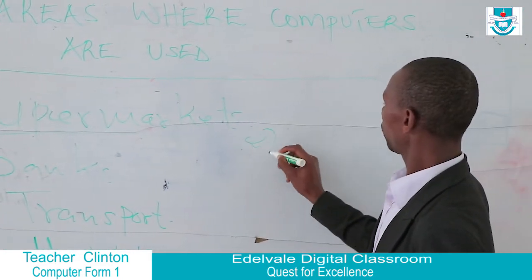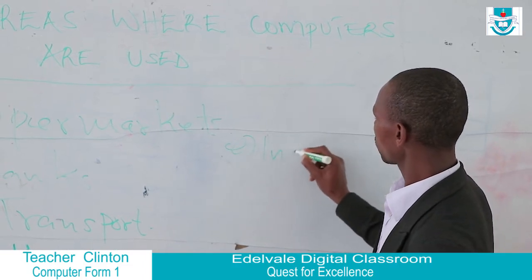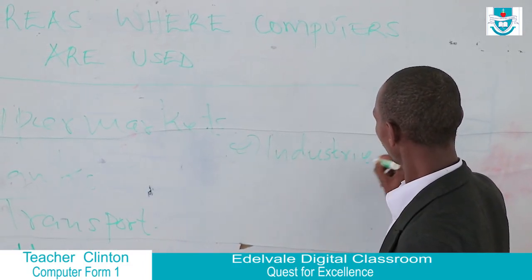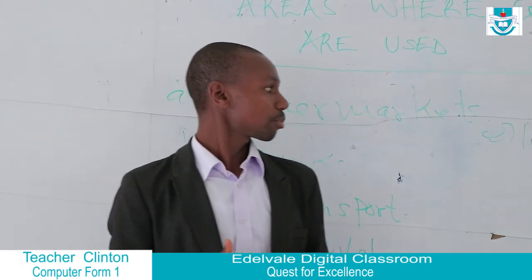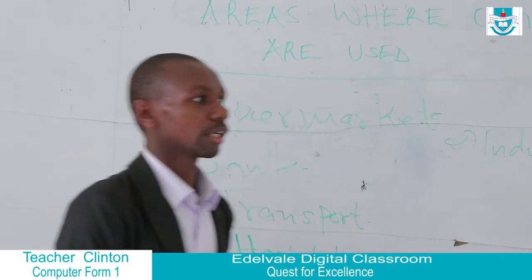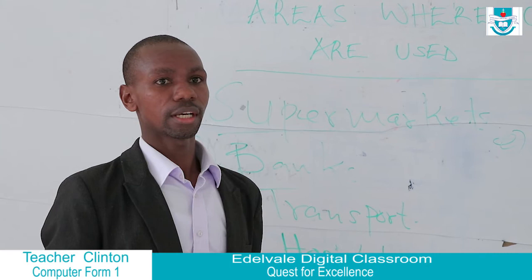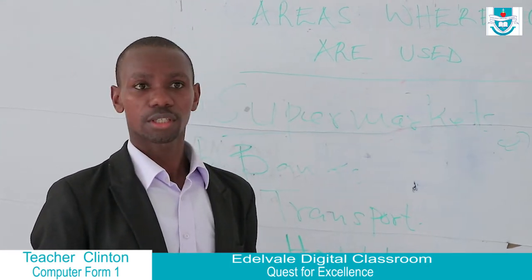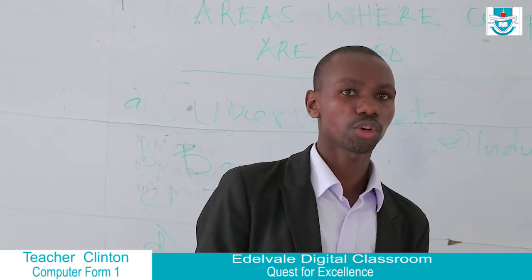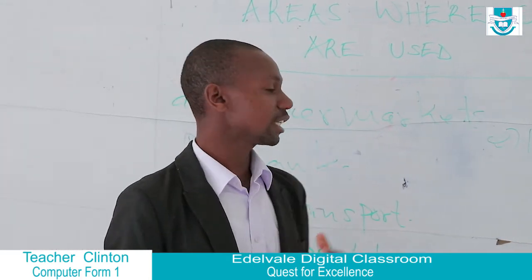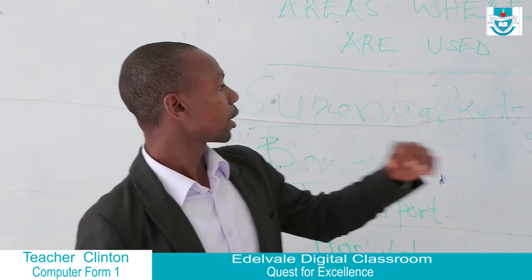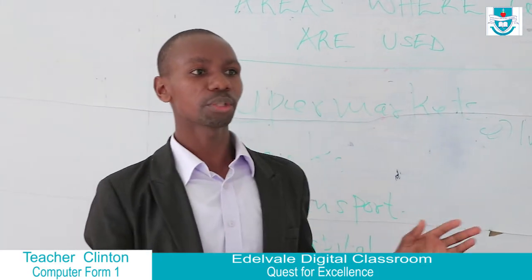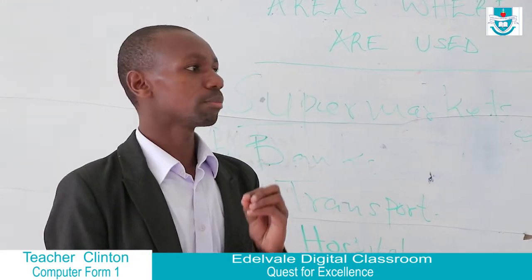The fifth area where we see computers being used is in industries, especially in most developed countries. Computers are used there in an advanced way — machines like robots are used to control and facilitate industrial processes, especially in areas which are not conducive for a normal human being, such as places with high temperatures or other hostile conditions.